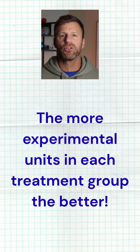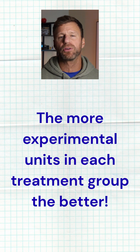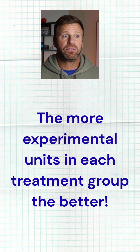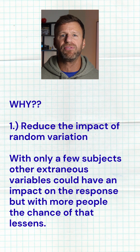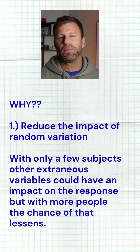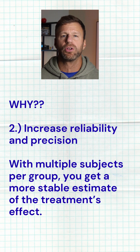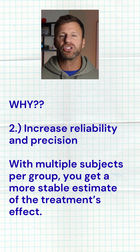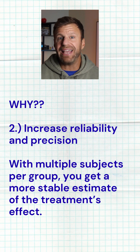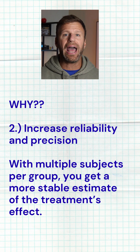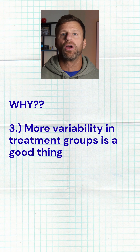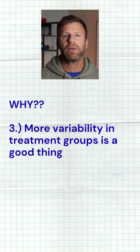If we just have one versus one — one person getting treatment A and one person getting treatment B — there are potentially 50 extraneous or confounding variables that could explain why the response was different, other than the treatment we gave them. But if we have 1,000 people getting treatment A and 1,000 people getting treatment B, then we're going to have much more strong data that convinces us that treatment A really did make an impact. It didn't just happen to that one person — it happened overall to everybody, or on average, that entire group was way better.